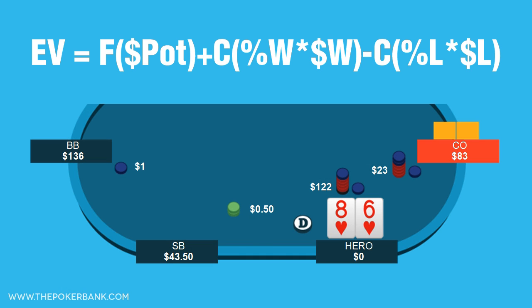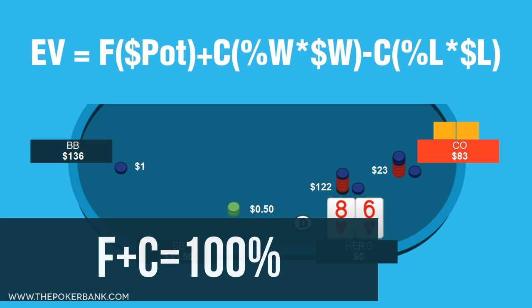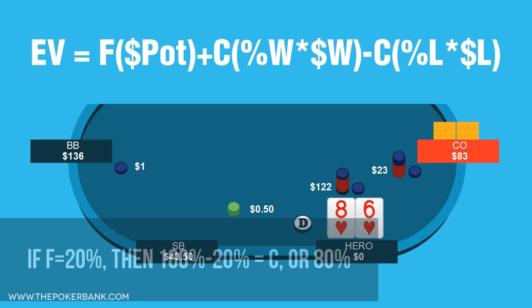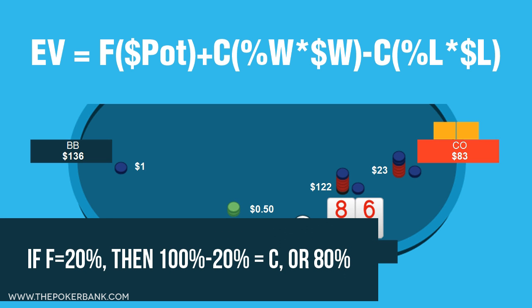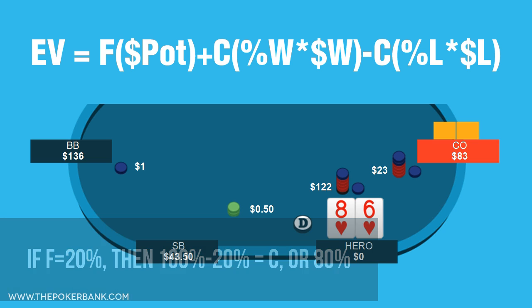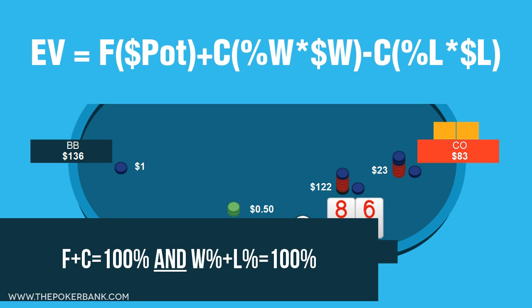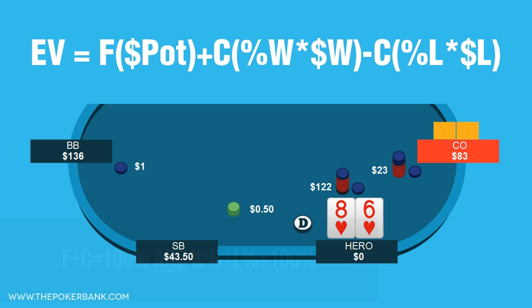If you only know one of F or C, you can always figure out the other since their sum is always 100%. If you know F is 20%, then you take 100% minus 20% and get 80% for C. Since F plus C equals 100% and percentage W plus percentage L equals 100%, it makes life even easier.